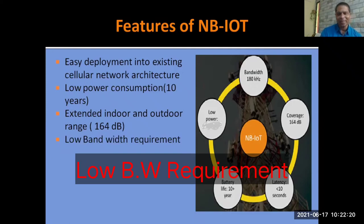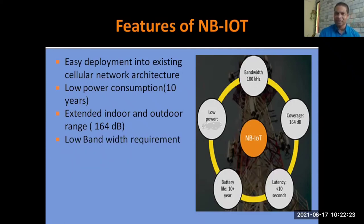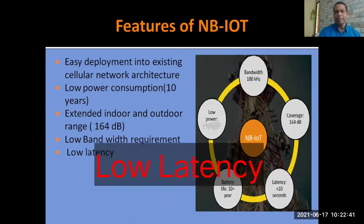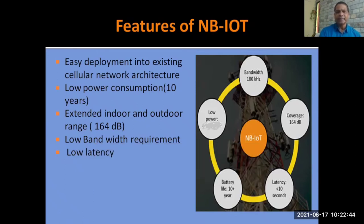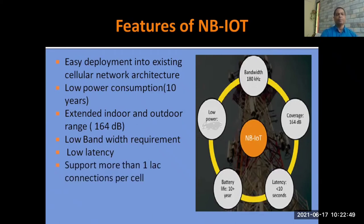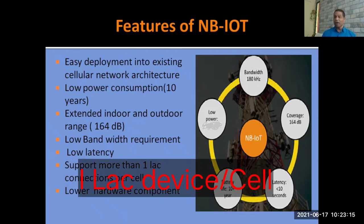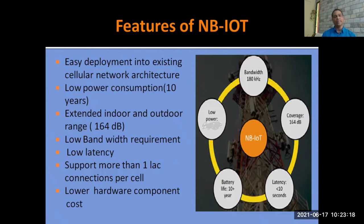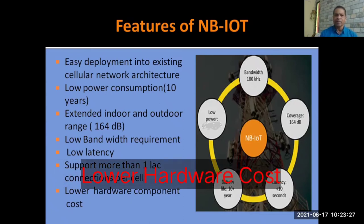NB-IoT has a low bandwidth requirement — the narrow channel is limited to only 180 kHz. Frequency spectrum is always an issue for mobile or wireless communication. NB-IoT provides low latency of less than 10 seconds compared to other technologies, supports more than 1 lakh connections per cell, and also features lower hardware costs, which always makes a difference when choosing a technology.